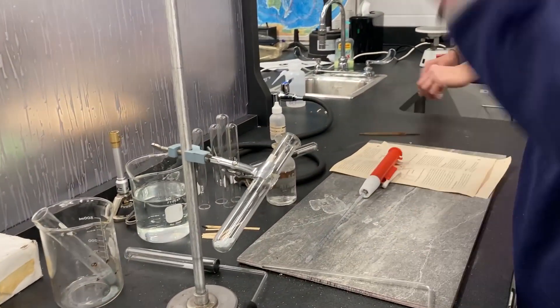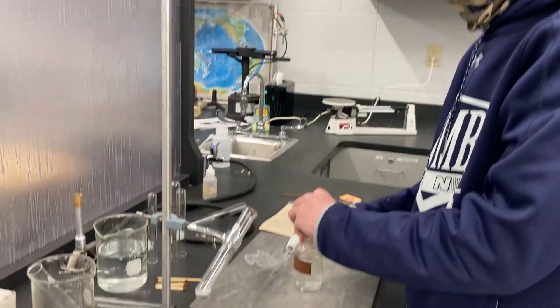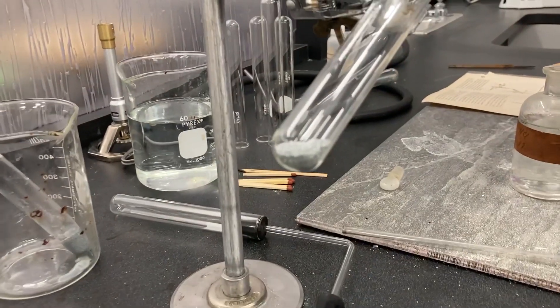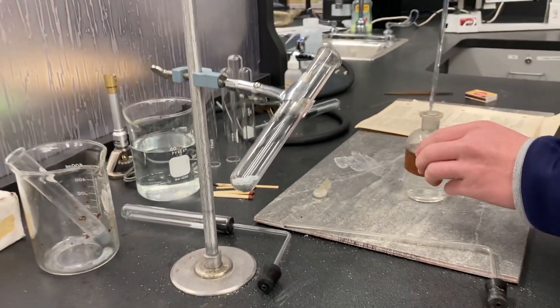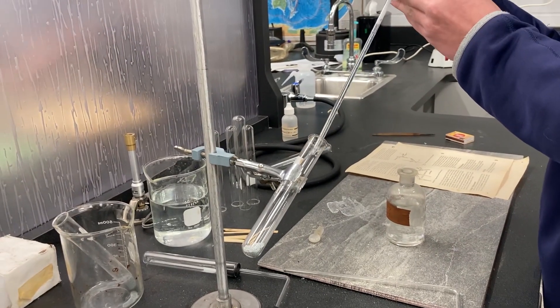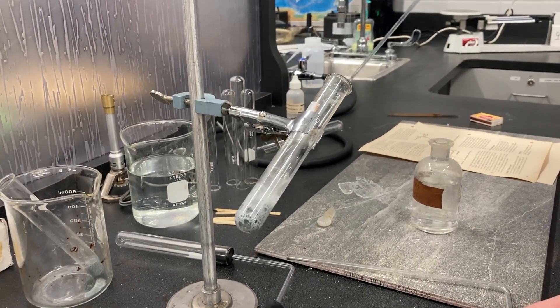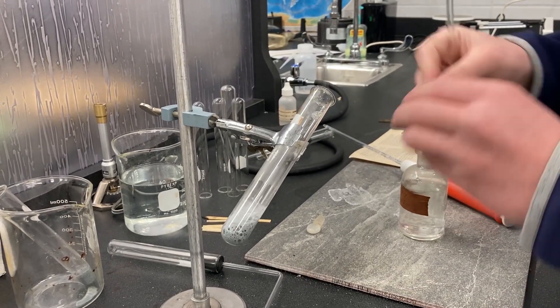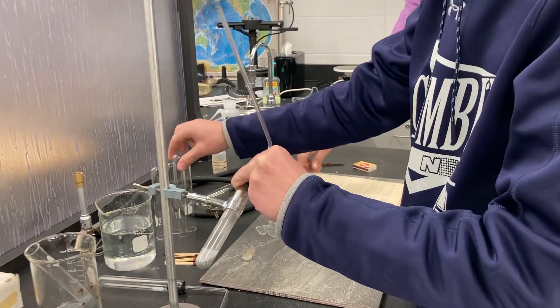The first step to this is to add the hydrochloric acid to the zinc. This creates a chemical reaction which will create this gas which we're going to capture with the stopper and put into test tubes.